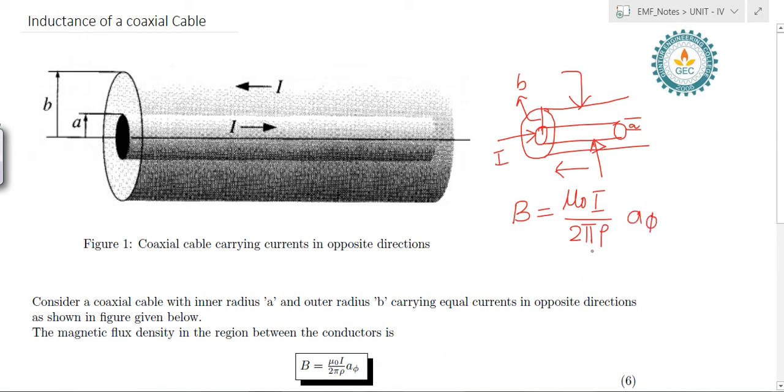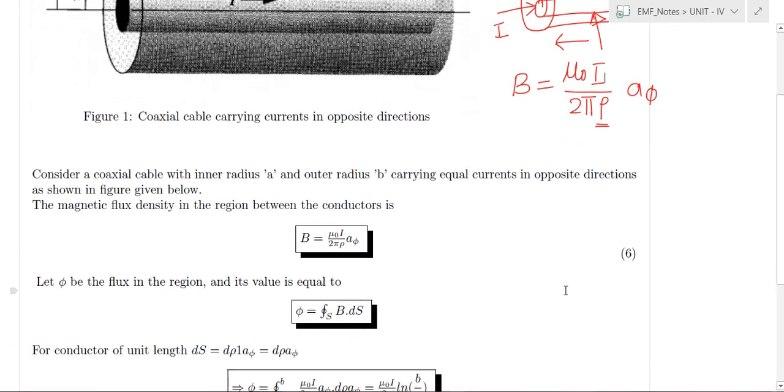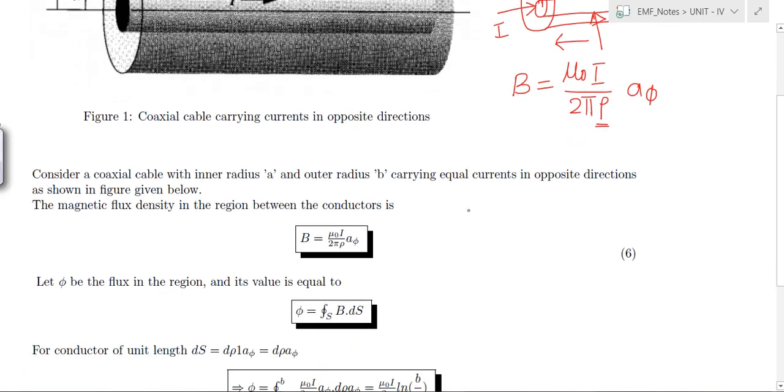That means the magnetic flux density is a function of distance between the space that exists between the inner and outer peripheries of the conductors. To evaluate inductance we need to find out the flux linkages that are linking the conductor.